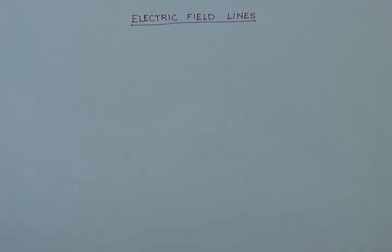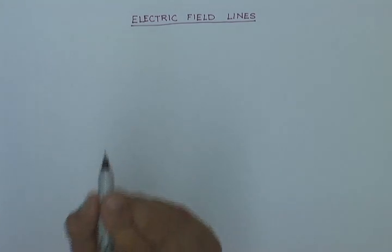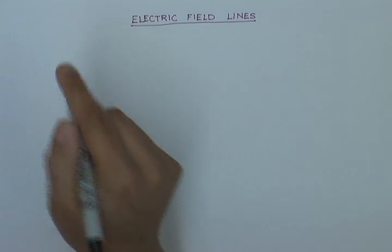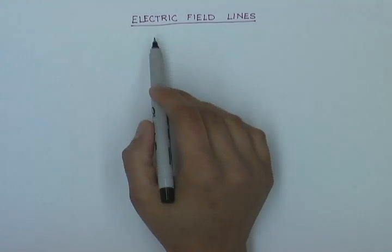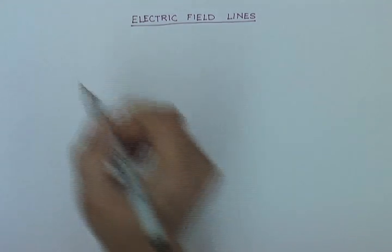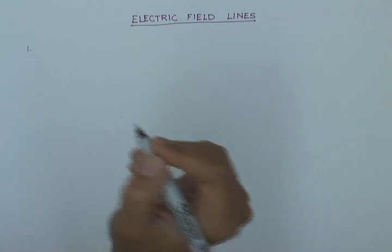We have studied the concept of electric field and seen how useful it is when we have complex charge distributions and want to find out the electric field due to them, and then find the force it exerts on positive and negative charges. Now let us take a minute and see how we can show an electric field graphically — how we can visualize electric field lines on paper. To show electric field graphically, we draw electric field lines, and there are a few rules to draw them.